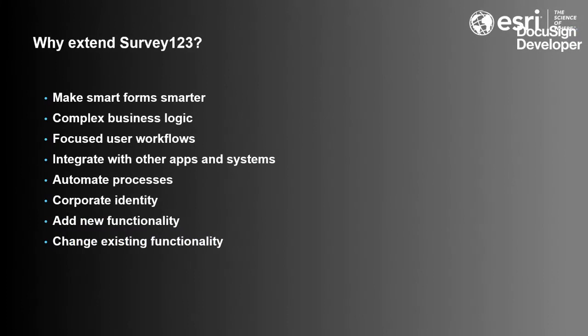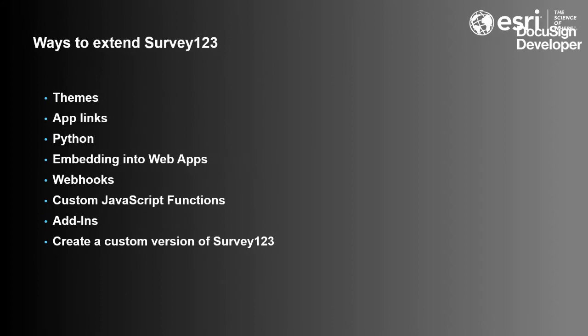Why do we extend Survey123? We do see people with a need to extend Survey123 further than what we provide out of the box. Some use cases include providing additional custom business logic — for example, integrations with other apps, like what you're doing with this hackathon. We also see the need to automate processes, better blend corporate identity and logos, make the form look more native to a site, or change existing functionality. We can extend capability through custom styling via themes, embedding into an application, or providing JavaScript functions to support custom business logic. Python is also a powerful way to automate parts of Survey123.